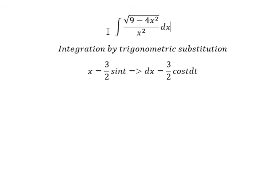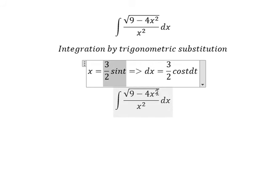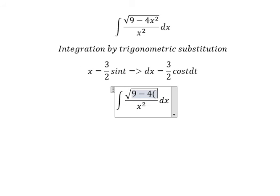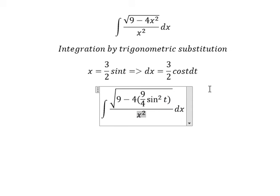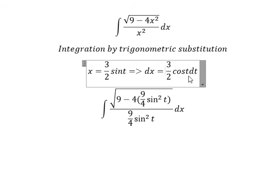Now we need to change this integral. This one we put in here, so you got 9 over 4 sine t square. This one we change to 9 over 4 sine t square. The x we change for this one.